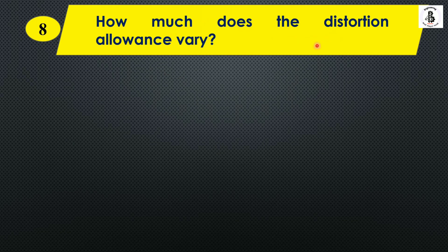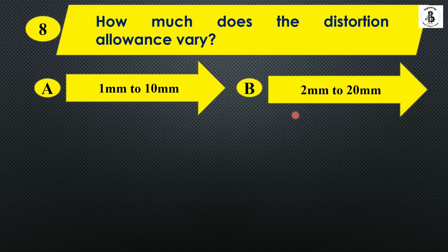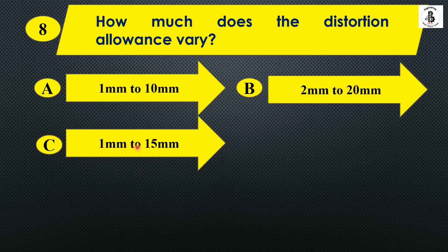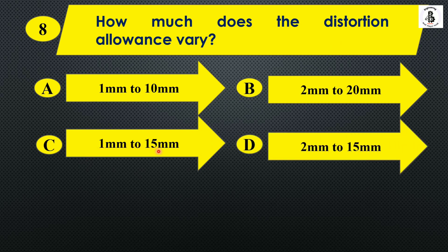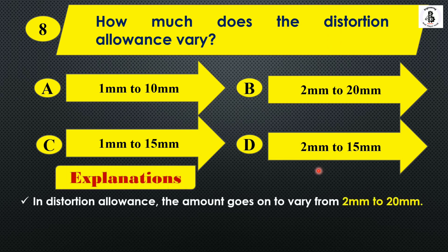Question eight: How much does the distortion allowance vary? Option A: 1 mm to 10 mm, Option B: 2 mm to 20 mm, Option C: 1 mm to 15 mm, Option D: 2 mm to 15 mm. Distortion allowance generally varies from 2 mm to 20 mm. The answer is Option B.